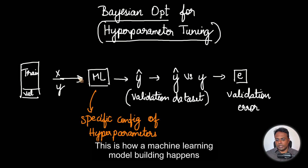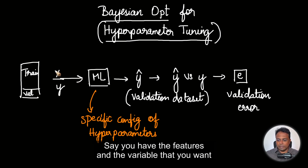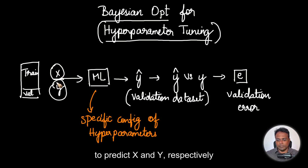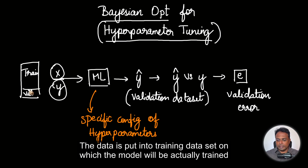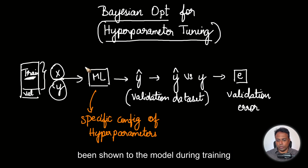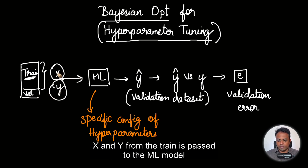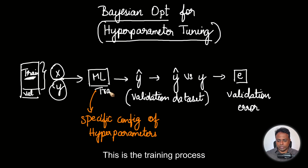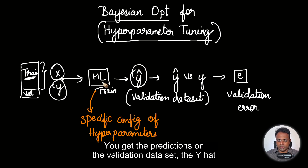This is how a machine learning model building happens. Say you have the features and the variable that you want to predict, X and Y respectively. The data is split into training dataset on which the model will be actually trained. Then you will do the prediction on validation dataset, which has not been shown to the model during training. X and Y from the train is passed to the ML model — this is the training process. You get the predictions on the validation dataset, the Y hat.